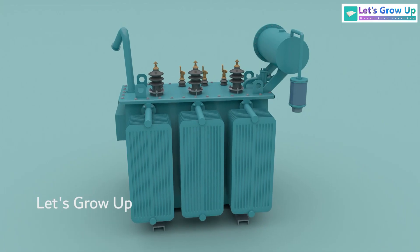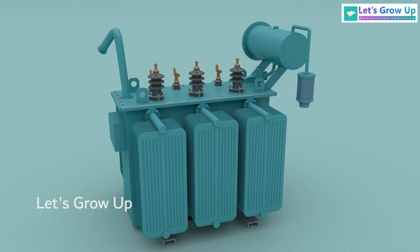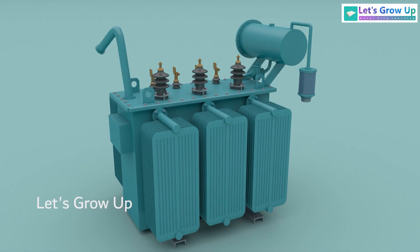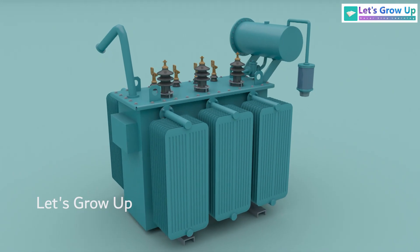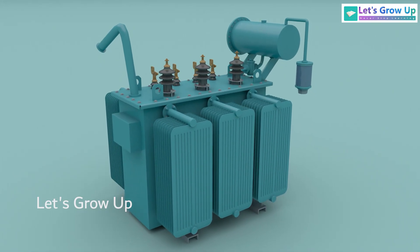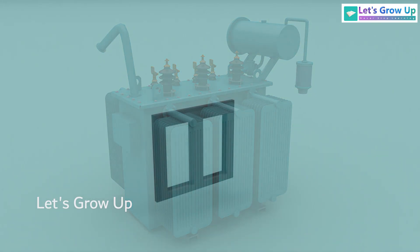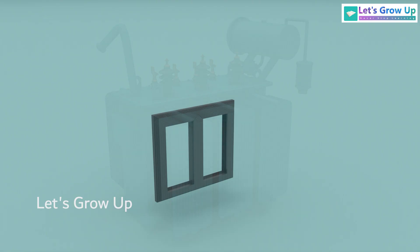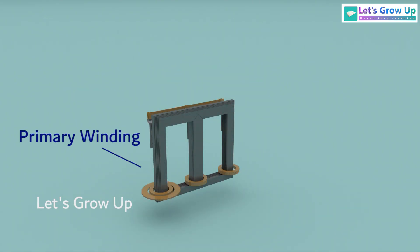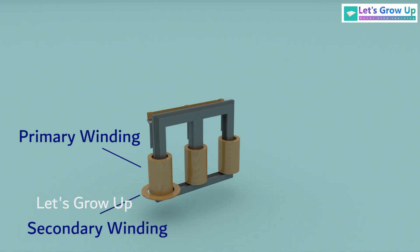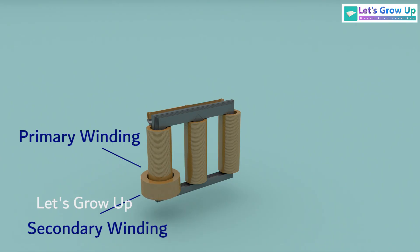A transformer comprises various types of parts that help during its operation. Inside the transformer, the core, primary winding, and secondary winding are the main parts.